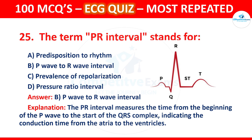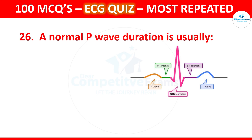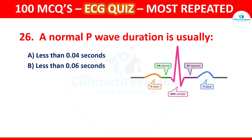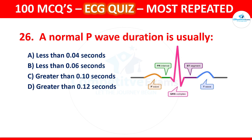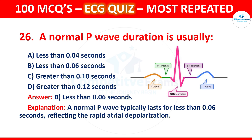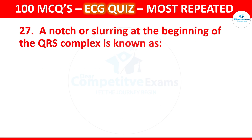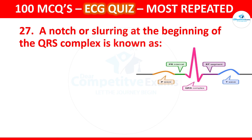Question 26: What is the normal P wave duration? Options are less than 0.04 seconds, less than 0.06 seconds, greater than 0.10 seconds, or greater than 0.12 seconds. The correct answer is less than 0.06 seconds. A normal P wave typically lasts less than 0.06 seconds, reflecting rapid atrial depolarization.